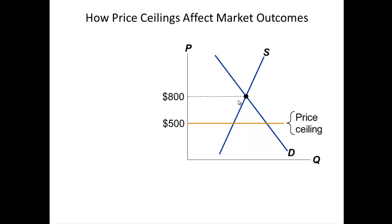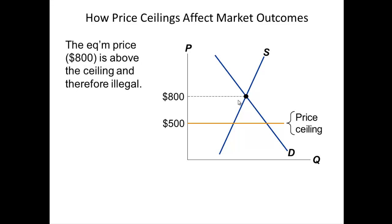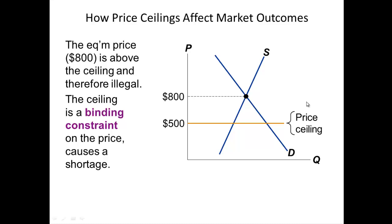Now, if the price ceiling is set below market price — for example, the market price is $800 but the government says that's too high and sets the price ceiling at $500 — this is called a binding constraint. When set above market price it's non-binding, but when the price ceiling is below market price, we have a binding constraint because it does affect what is sold and it affects the market.